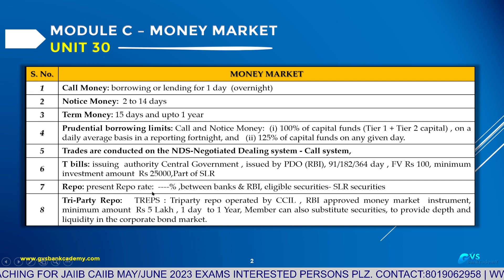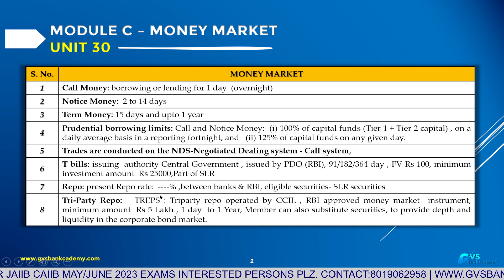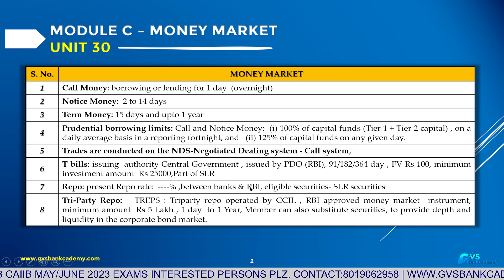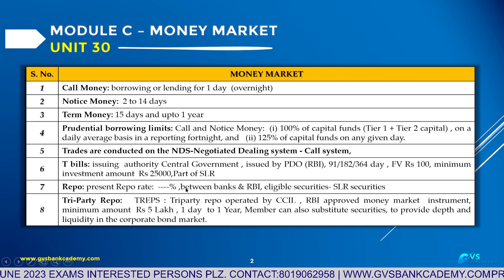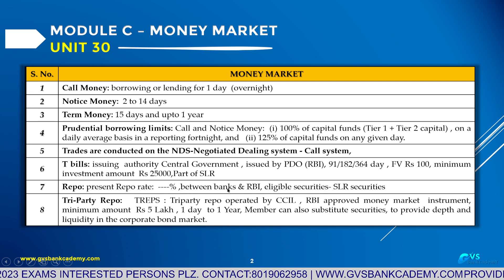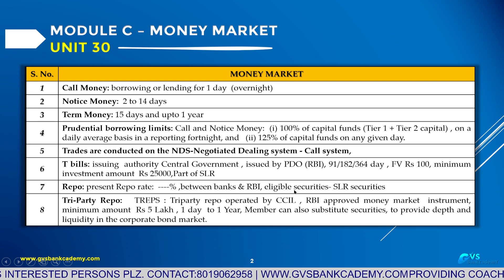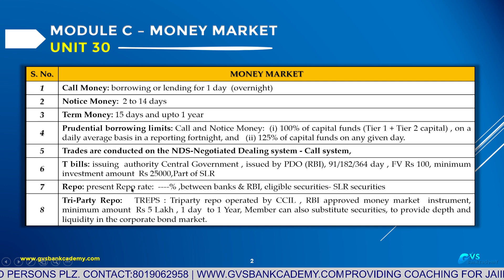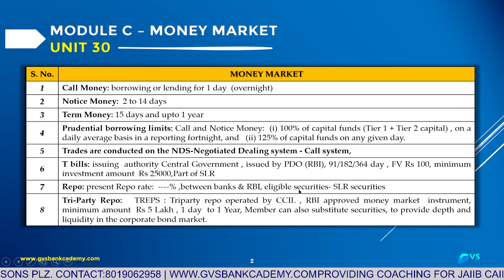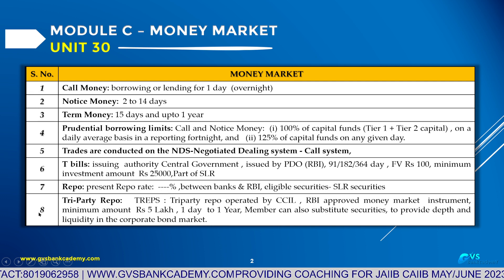The present Repo rate is 6.5%. Repo means borrowing from RBI against SLR securities by scheduled commercial banks. In a repo transaction, the first leg is borrowing from RBI, and the second leg is repayment to RBI along with the borrowed funds plus interest. Banks have to give unencumbered, clear SLR securities to RBI as security.